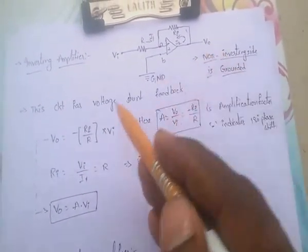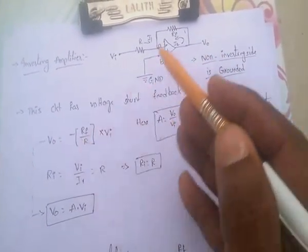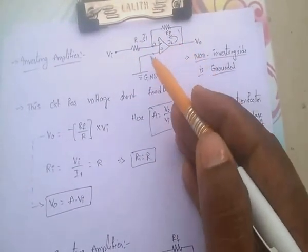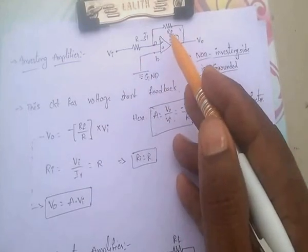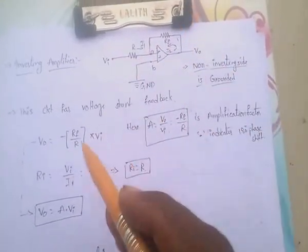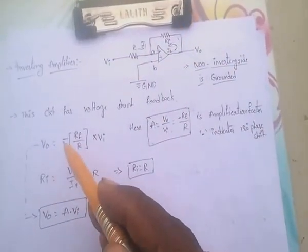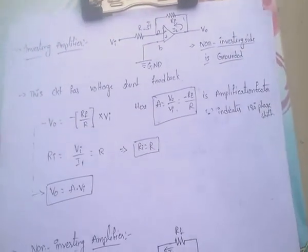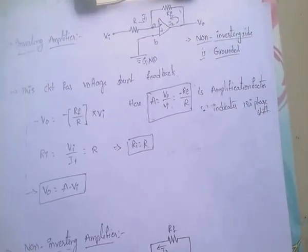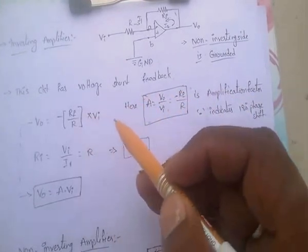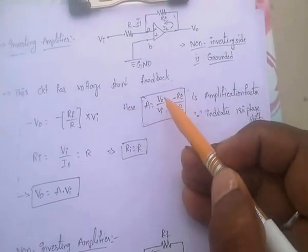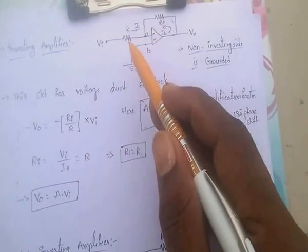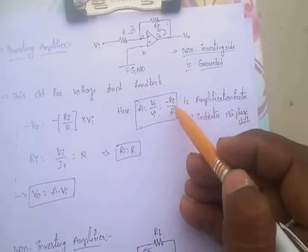The output voltage V0 equals minus RF by R into Vi. Minus RF by R is nothing but A. So if we replace minus RF by R with A, then V0 equals A into Vi. A equals V0 by Vi, which equals minus RF by R.